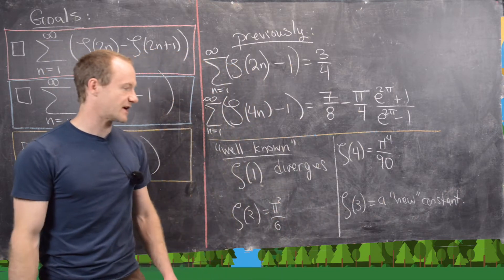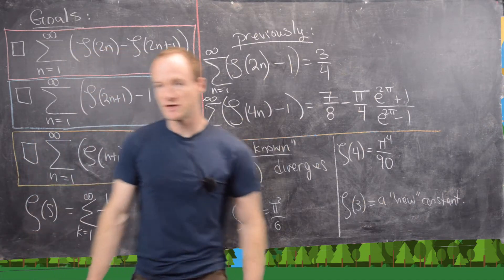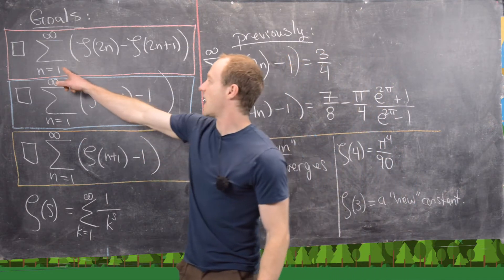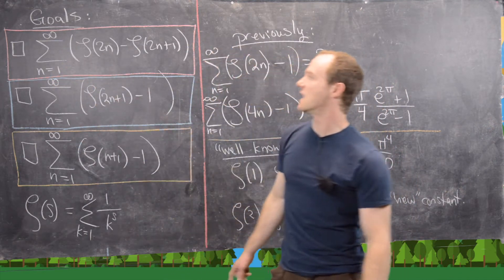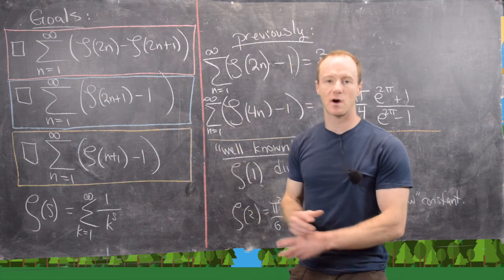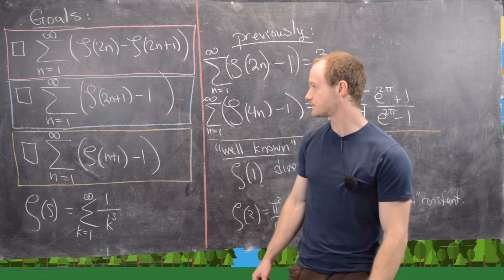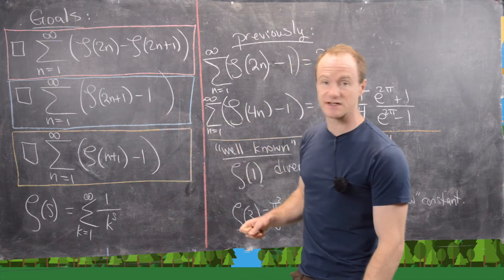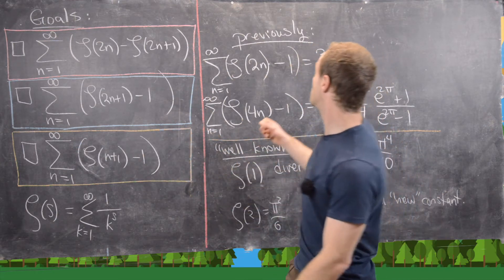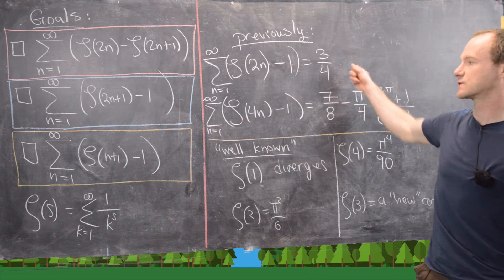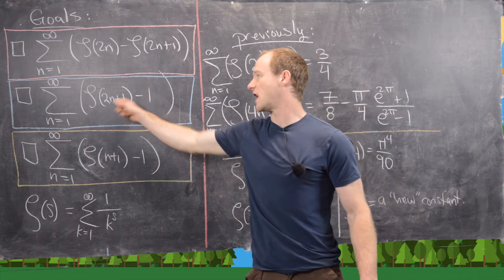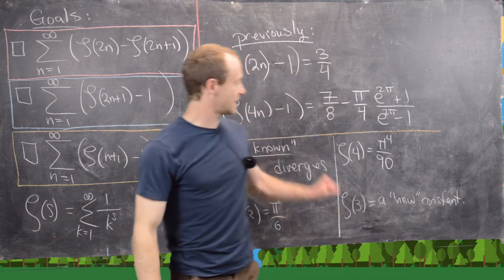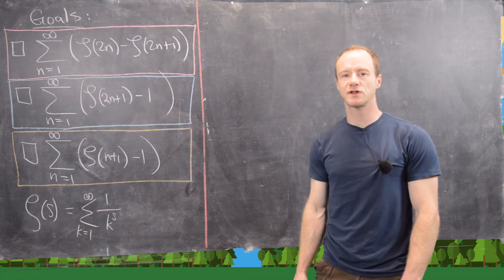So zeta of 3 is considered a new constant. Our goals for this video: first, prove that the sum from n equals 1 to infinity of zeta(2n) minus zeta(2n+1) converges to a nice number. From this, we'll derive two more identities — the sum of all odd zeta values minus 1, and the sum of all zeta values minus 1.